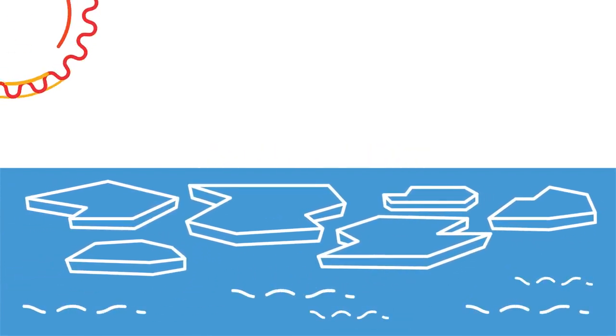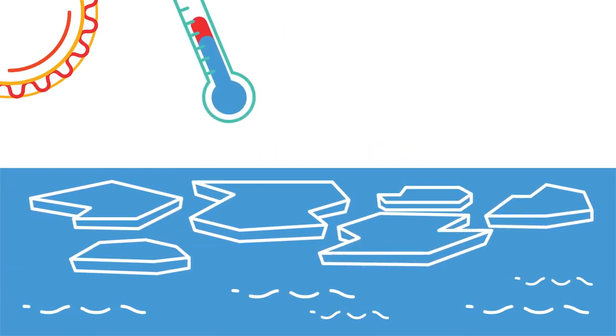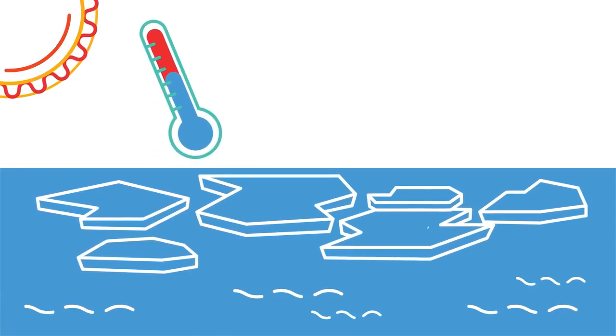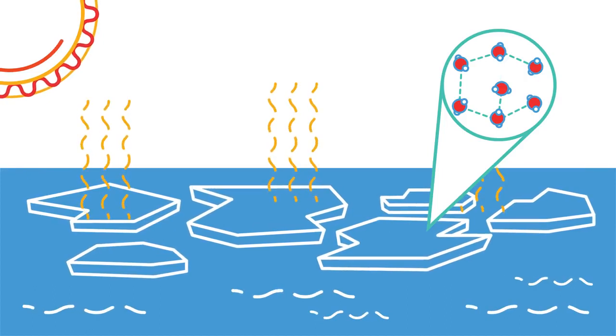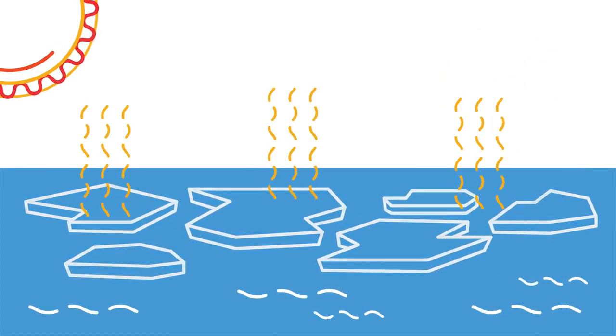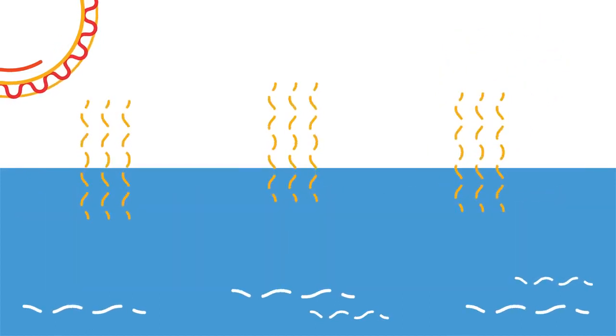Think of the Arctic sea ice. In the summer, when air temperatures are warmer, more heat energy is absorbed by the ice. This causes bonds to break between the ice's water molecules, and the ice starts to melt. The solid ice becomes liquid water.